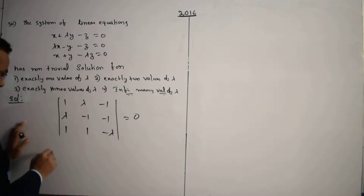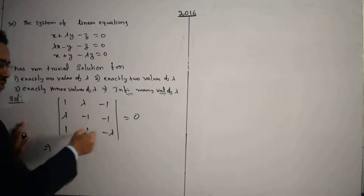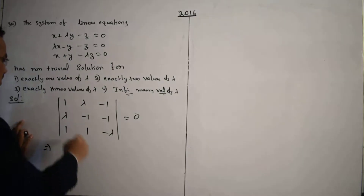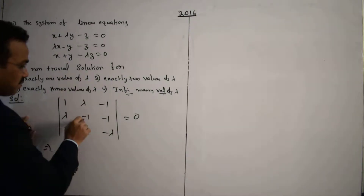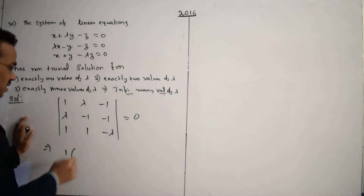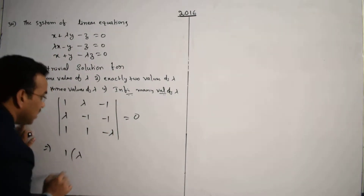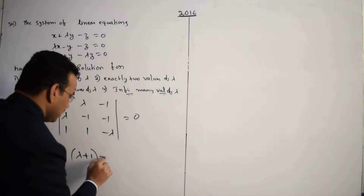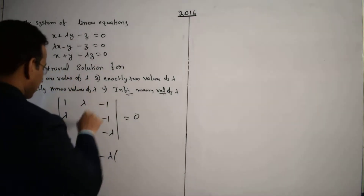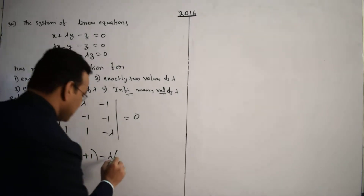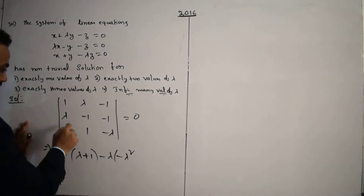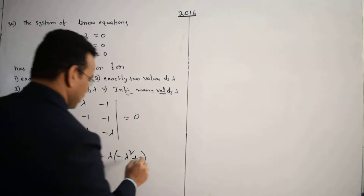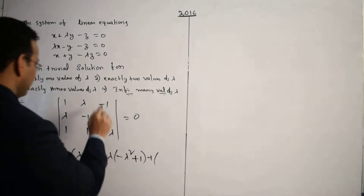Expanding the determinant along the first row: 1 times the minor |(-1, -1; 1, -λ)|, which gives (-1)(-λ) - (-1)(1) = λ + 1. Then minus λ times the minor |(λ, -1; 1, -λ)|, giving -λ² + 1. Then plus (-1) times |(λ, -1; 1, 1)|.